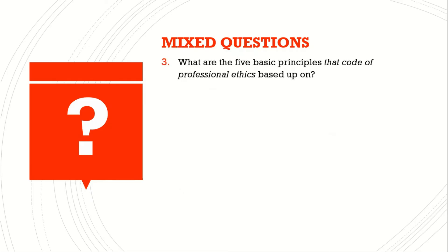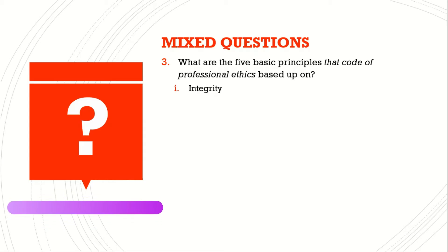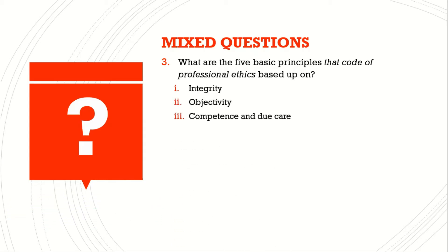Question number three: What are the five basic principles that a code of professional ethics is based upon? Answer: Integrity, identity, objectivity, competence, confidentiality, and professional behavior.